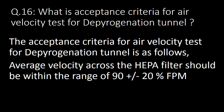Next important question: what is the acceptance criteria for air velocity test for depyrogenation tunnel? The acceptance criteria for air velocity test is as follows: average velocity across the HEPA filter should be within the range of 90 plus or minus 20% of fpm, that is feet per minute.